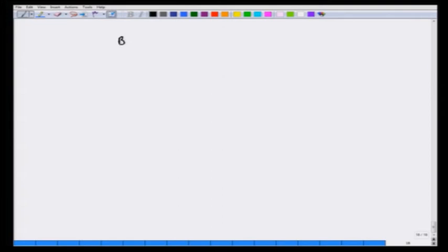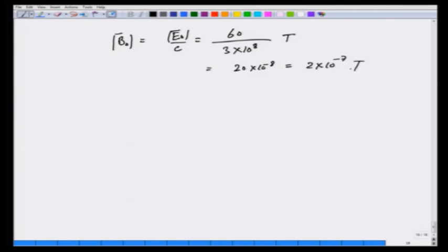How about the corresponding magnetic field? The magnetic field magnitude is nothing but E0 over C. So, this is going to be 60 over 3 times 10 raise to 8 tesla which is 20 times 10 raise to minus 8 which is 2 times 10 raise to minus 7 tesla. So, the associated magnetic field is really very very small.